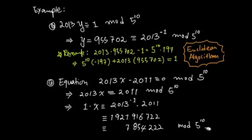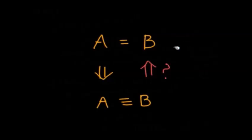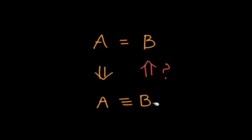The result turns out to be larger than 5^10, so you can reduce it by taking its remainder. That means any integer in the whole set of integers satisfying this relation modulo 5^10 must be congruent to 7,854,222. This congruence relation is merely a tool to solve the problem of A equals B — if A and B are exactly the same number, of course their remainders are the same. So we have this implication, but a congruence doesn't give you equality directly. However, investigating many different primes p might let you say something about the original equation.